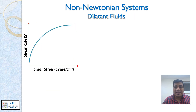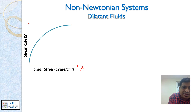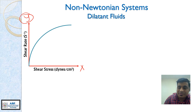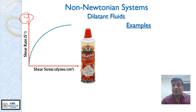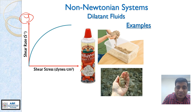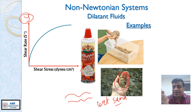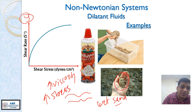Now let us move to dilatant liquids or dilatant fluids. On the x-axis you have shear stress and on the y-axis shear rate. When you are applying shear stress, the viscosity is increasing. Examples of dilatant fluids include whipping cream — when you shake it, it feels like a liquid, but when you squeeze the canister it converts into nice cream. Another example is wet sand at the beach: the sand flows, but when you squeeze it, you get a very solid structure — viscosity increases with applied stress.